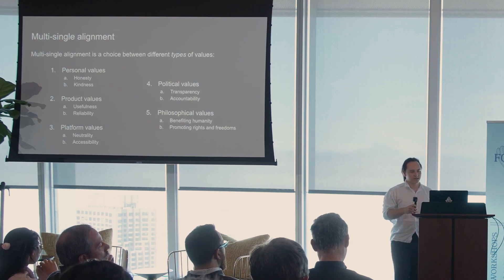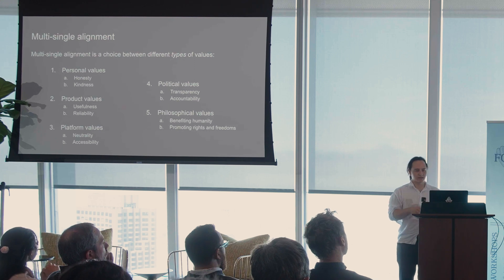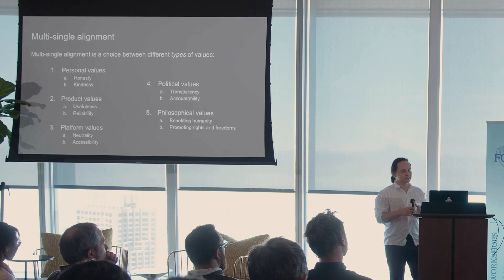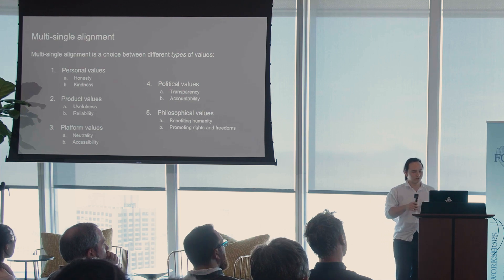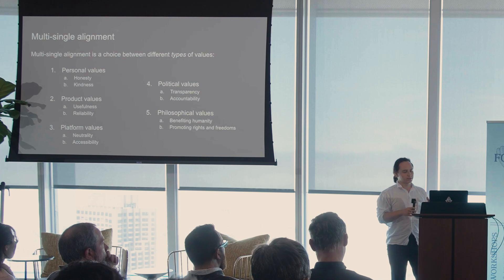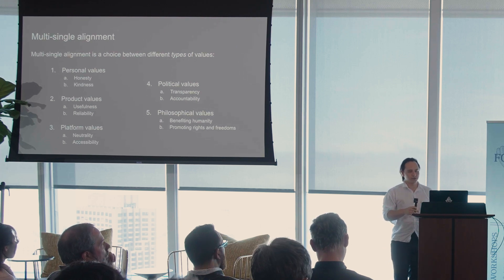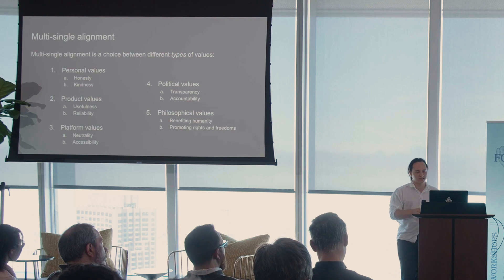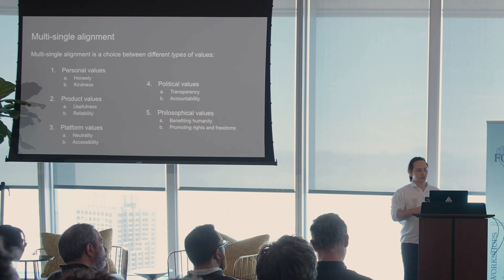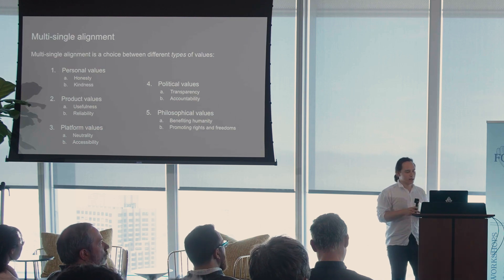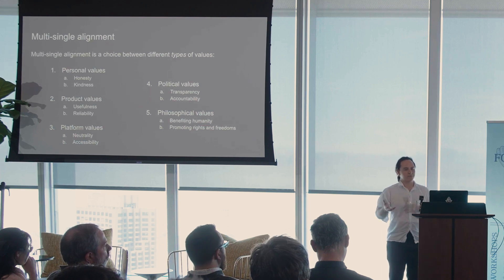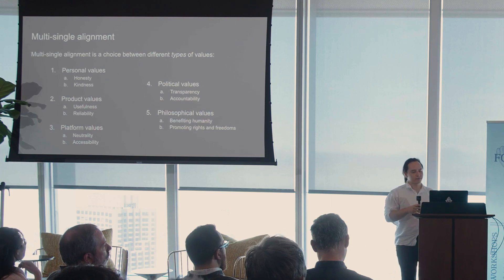Political institutions, for example, are not in the business of taking all the individuals they represent and literally aggregating their values. Instead, we should think of these institutions as having higher-level values like transparency, accountability, and free speech. Depending on how AIs are used, we should align them in the same way we might align a platform like Facebook towards values of neutrality or accessibility, or a political institution towards accountability and transparency. This is in contrast to the approach of polling many people and trying to figure out what an AI with the average of all their values would look like. I think that approach is not going to work.